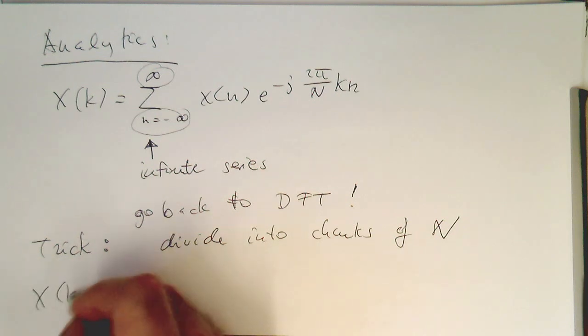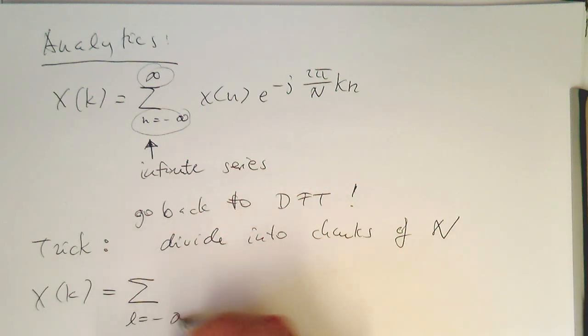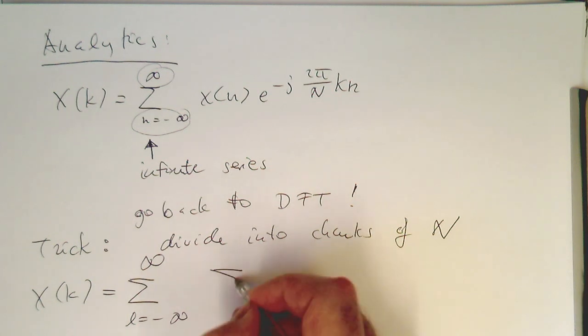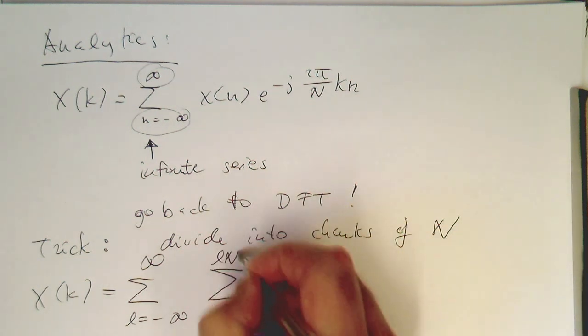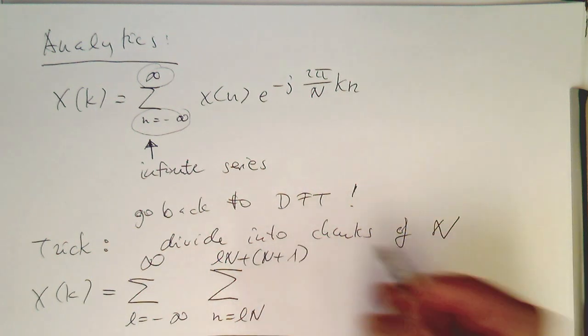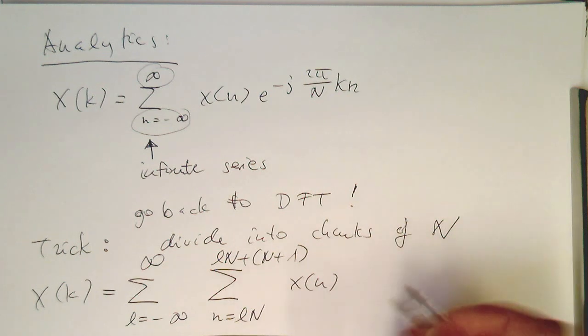So let's do that, x of k, and then this is here, l equals minus infinity to plus infinity. And then we are creating our chunks with this l variable here, so ln, and then this runs to ln plus n minus 1.